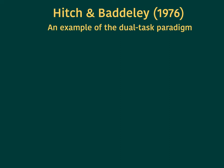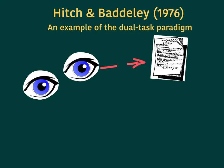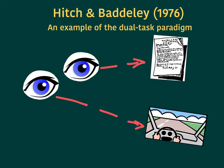Hitch and Baddeley's 1976 study is an example of the dual task paradigm. For example, if you're trying to read a letter, you really ought not be focused on driving a car, as both these tasks draw on the visuospatial sketchpad, and therefore there won't be enough attention to do both properly, resulting in very bad things.